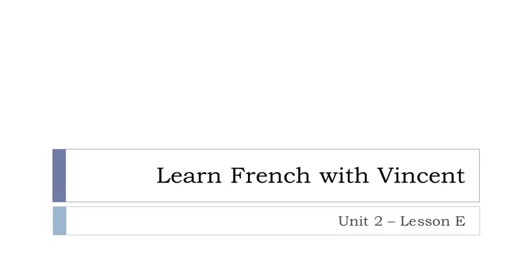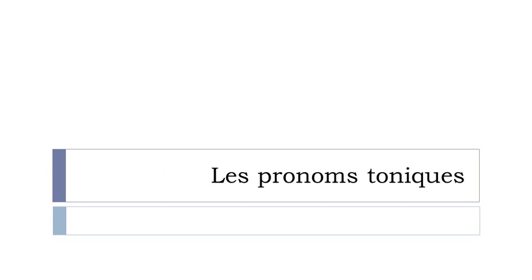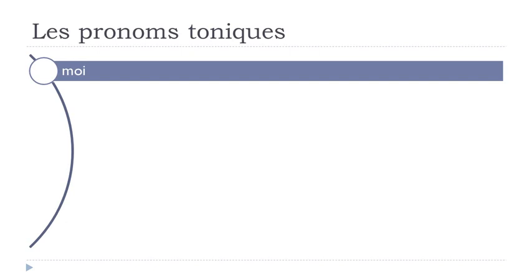Bonjour à tous, hi everyone and welcome to Learn French with Vincent. This is Unité, Leçon E. So let's see what we'll discover in this lesson — we'll work on les pronoms toniques. They're useful and normally we tend to introduce them quite fast in French because you will have to use them. Les pronoms toniques. If you remember, we saw les pronoms personnels like je (I), tu (you), etc.